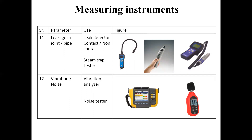During an audit, leakages must also be checked — leakages inside steam pipelines, air pipelines, water or other fluid pipelines. A leak detector is available in both contact-type and non-contact type. There is also a separate instrument for steam traps, used to check how much steam is leaking from the steam trap. All these instruments are used to check for leakages.